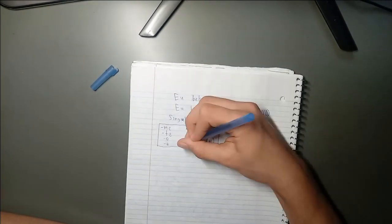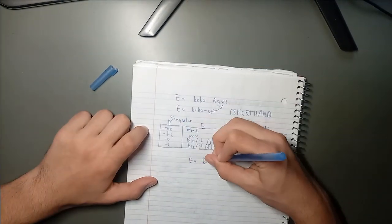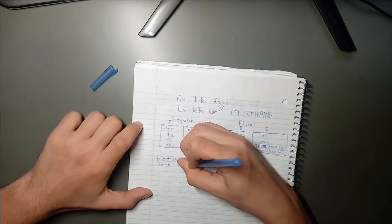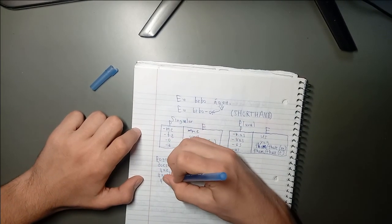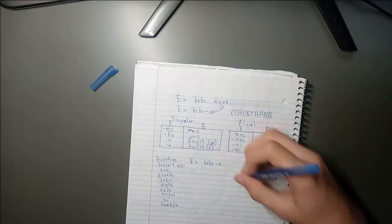Here's a chart showing the direct object pronouns. If a sentence is positive and doesn't use a few choice words, the pronoun, in this case, will be attached to the verb with a hyphen.